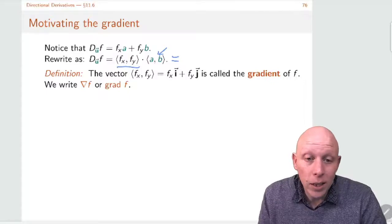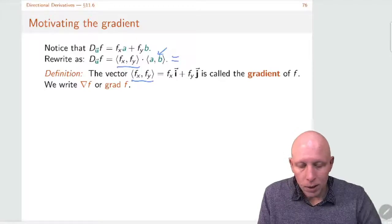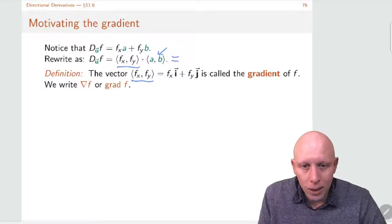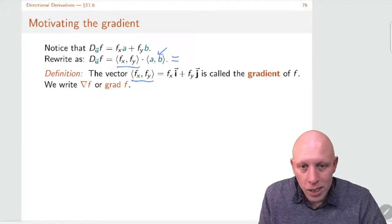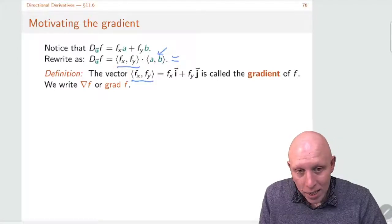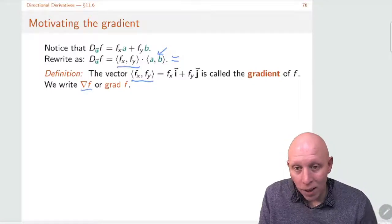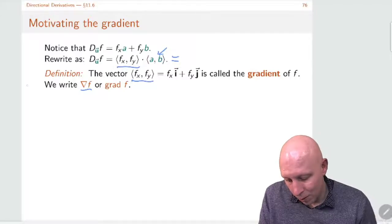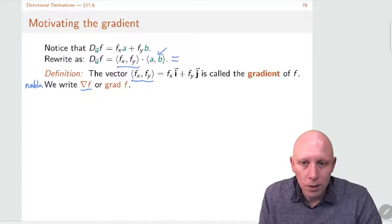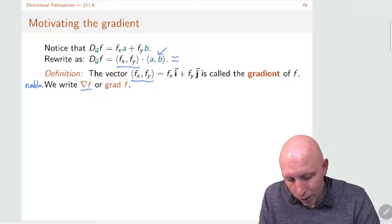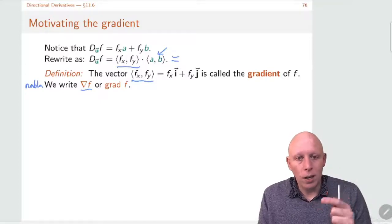This vector has a name. The vector of all the partial derivatives written in a certain order — normally x, y, or x, y, z — is called the gradient vector. We write this as nabla f, or the gradient of f, grad f. It is a vector made up of all the partial derivatives of f.